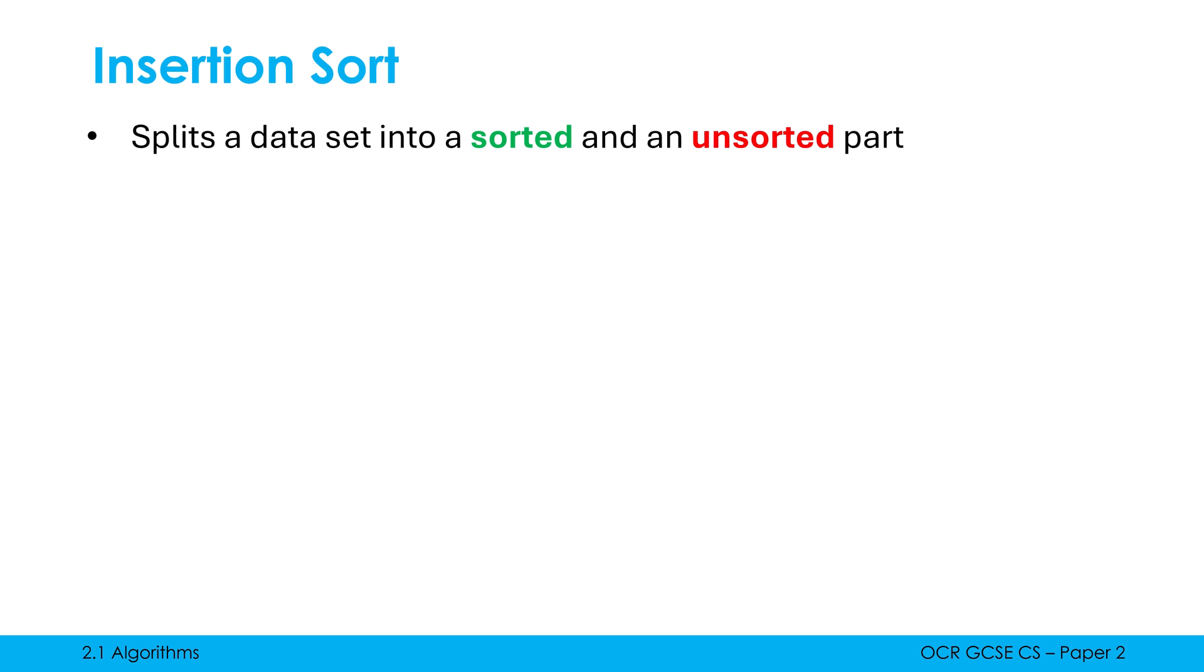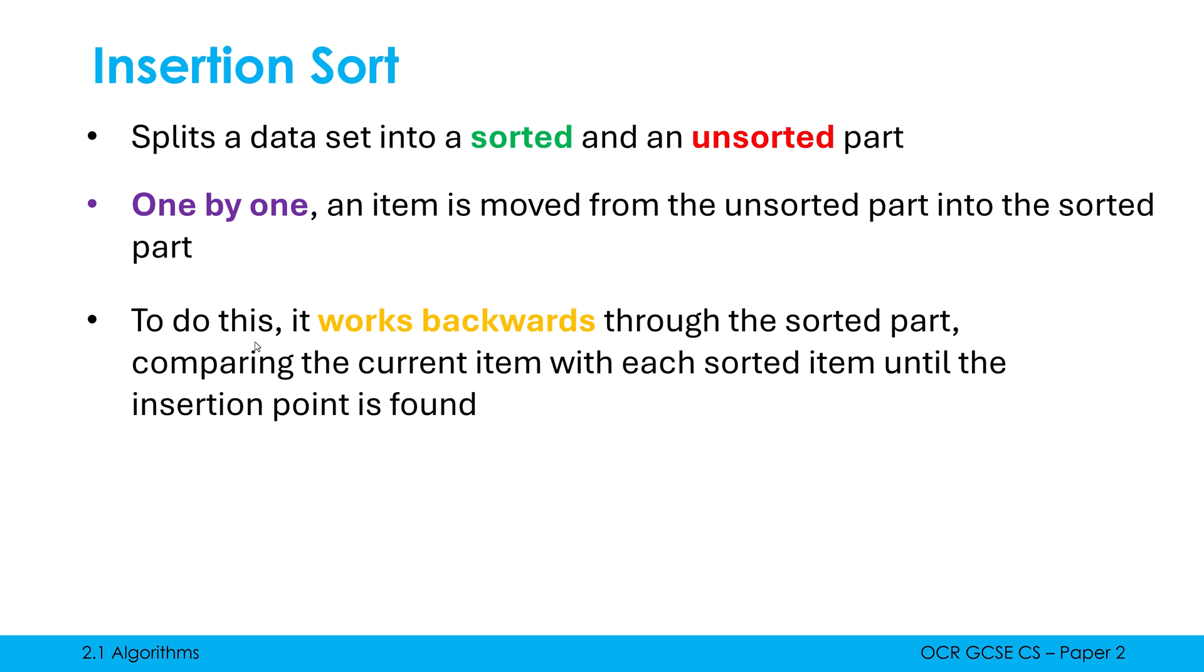Well, it splits the dataset into a sorted and an unsorted part. One side being sorted, one side being unsorted. And initially, our sorted side only contains one item in it. And one by one, we move an item from the unsorted part into the sorted part. And when we do this, we need to make sure the sorted part has its order maintained.